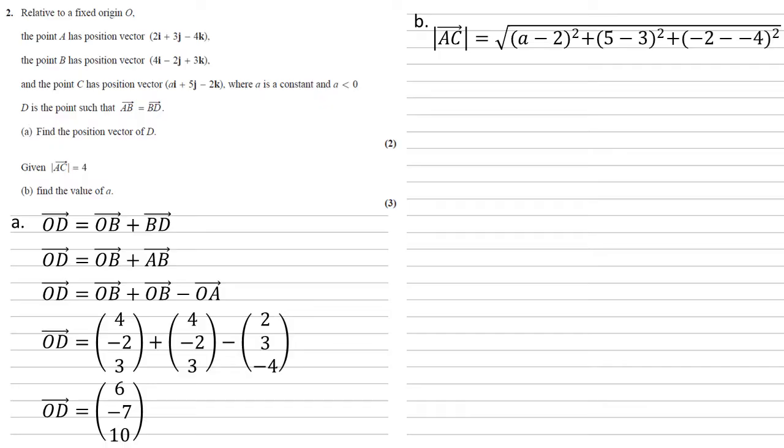Where the a is the i part of C and the 2 is the i part of A, and similar things for the rest. So plus the difference between 5 and 3 squared, plus the difference between -2 and -4 all squared.